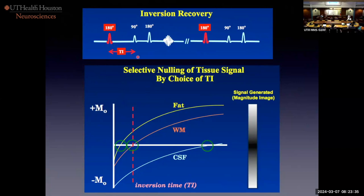If I pick the TI — the time between the inversion pulse and the 90-degree pulse — for CSF, there's been no recovery of longitudinal magnetization. It's zero. There's no signal from CSF. I can null it. If I pick a short TI, I can null fat. If I did two 180s, I can null both white matter and CSF to get a double inversion recovery — a wonderful sequence for cortical malformation or demyelinating disease with both CSF and myelin suppressed.